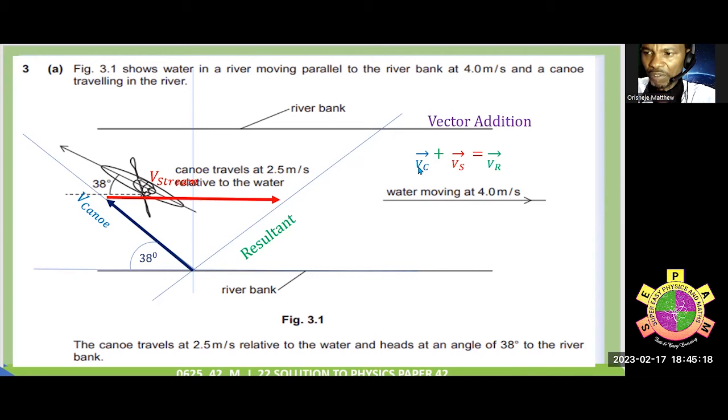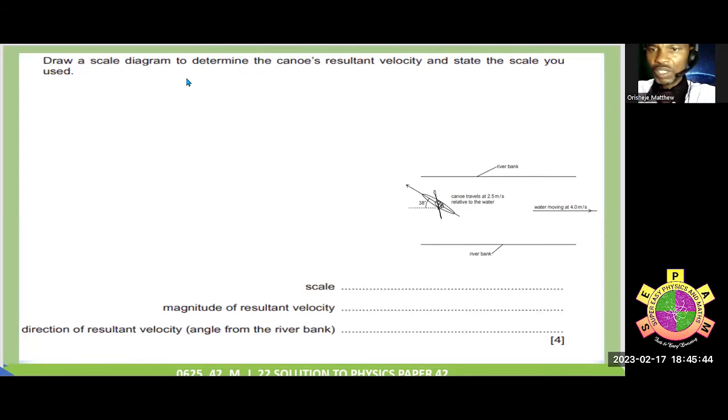Vector VC plus vector VS will give you vector VR. VR is the resultant vector that is obtained by the addition of these two vectors. So that is the green one, is the resultant. The two vectors you add together, the blue and the red, are the components. While the one that is produced is the resultant. Let's answer the question. Draw a scale diagram to determine the canoe resultant velocity. What is important here, you are expected to know the resultant velocity of the canoe. This is the diagram. Let's draw.